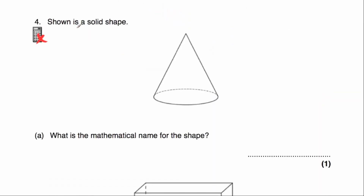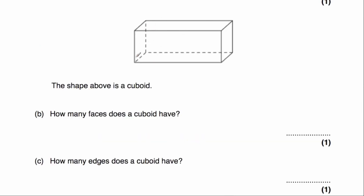Question number 4: we've been asked to write down the mathematical name for this solid shape. This is a cone. Then carrying on with the question, we've got a shape which is a cuboid, and we've been asked how many faces a cuboid has. A cuboid has the face on the left-hand side, the right-hand side, the bottom, the front, the back, and the top — altogether that's 6 faces, just like a cube.